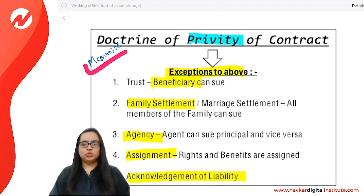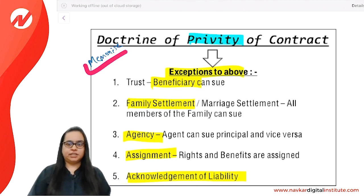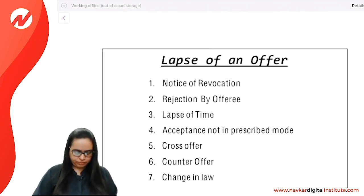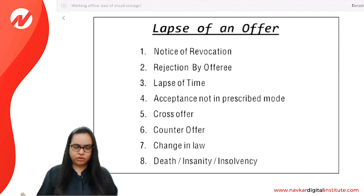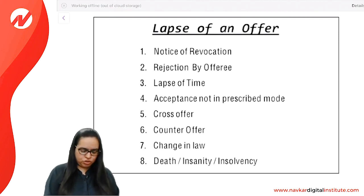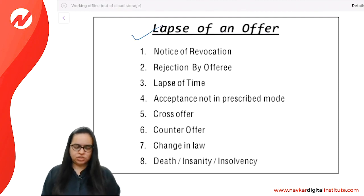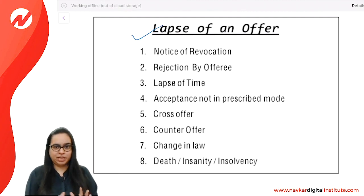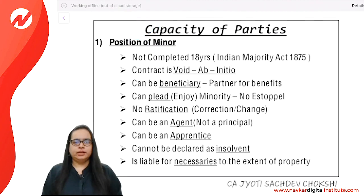Both sets of exceptions — five for 'no consideration no contract' and five for 'doctrine of privity' — must be memorized. Do not mix them. Also read 'lapse of an offer' carefully — it is simple but asked in exams.